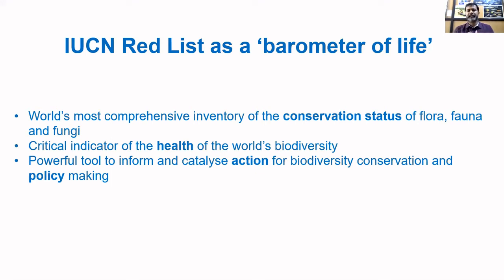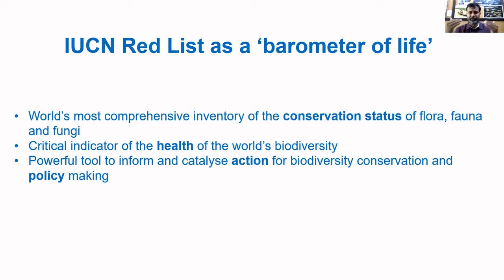Currently the IUCN Red List is the most comprehensive inventory of the conservation status of the world's flora, fauna, and fungi. It tells you about the health of the world's biodiversity — how well or poorly different species are doing. Most importantly, it helps as a policy tool to catalyze action and develop policy frameworks across the world, helping species conservation at various levels from local to regional to national to global.